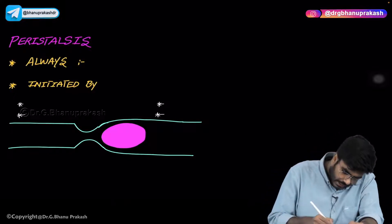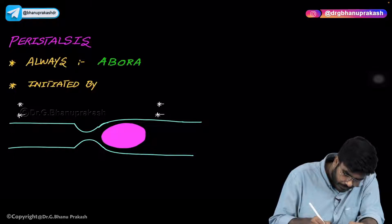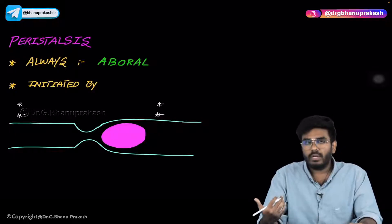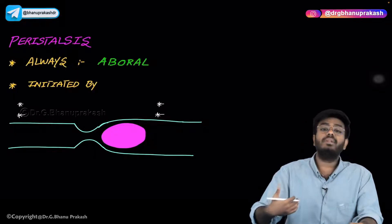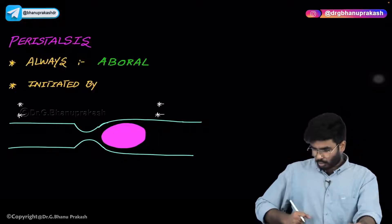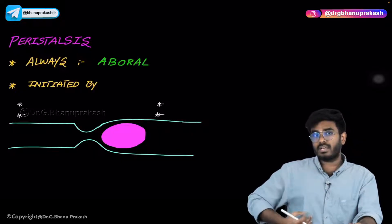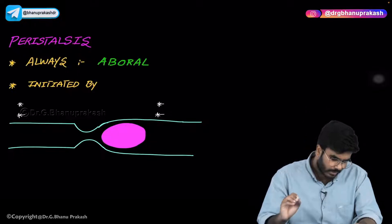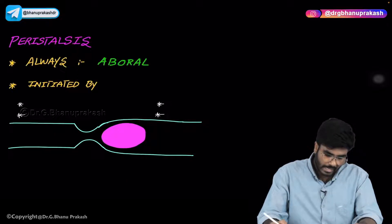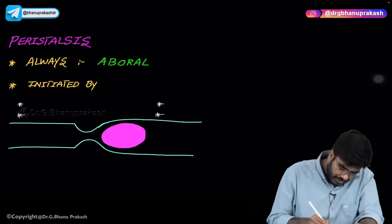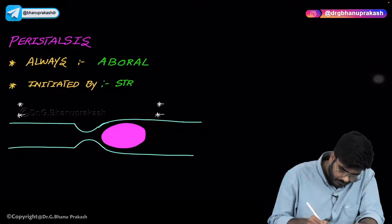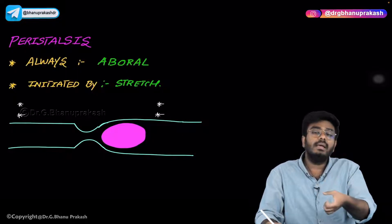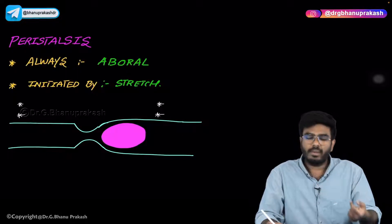Peristalsis is always aborad — the wave of contraction always moves away from the stomach. The only place in the body where natural anti-peristalsis naturally occurs is the ascending colon, where contraction moves toward the mouth. Peristalsis is initiated by stretch, which activates the myenteric plexus.